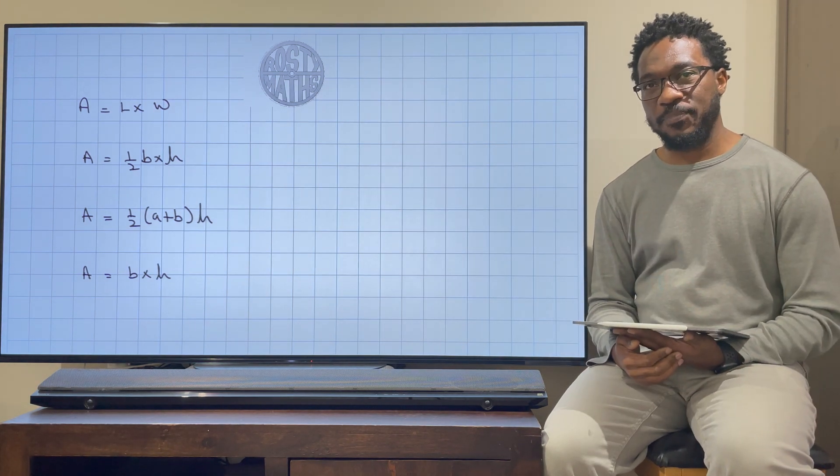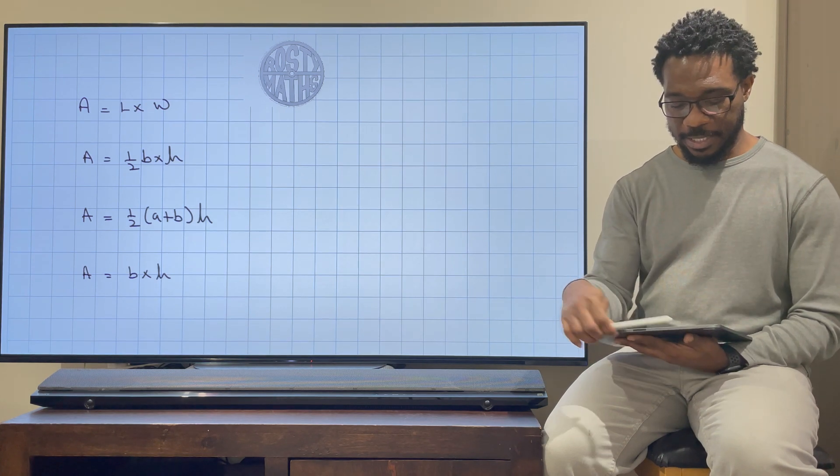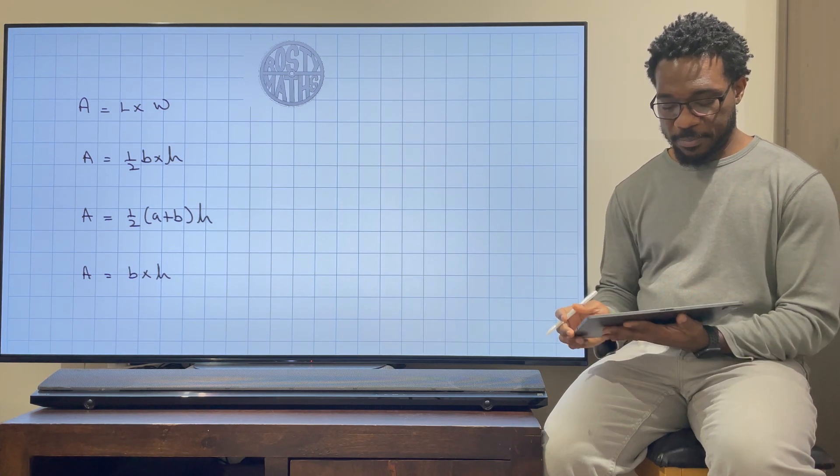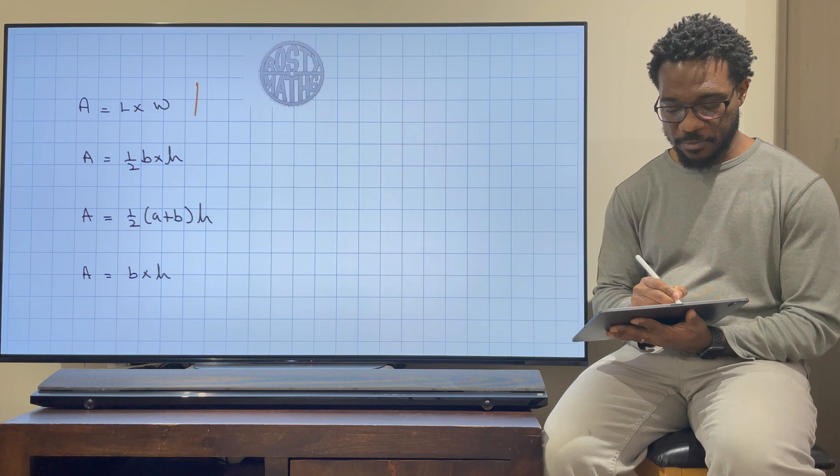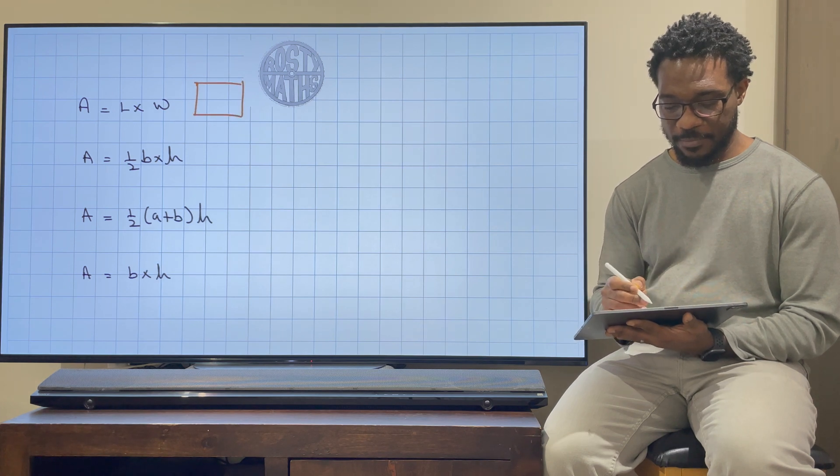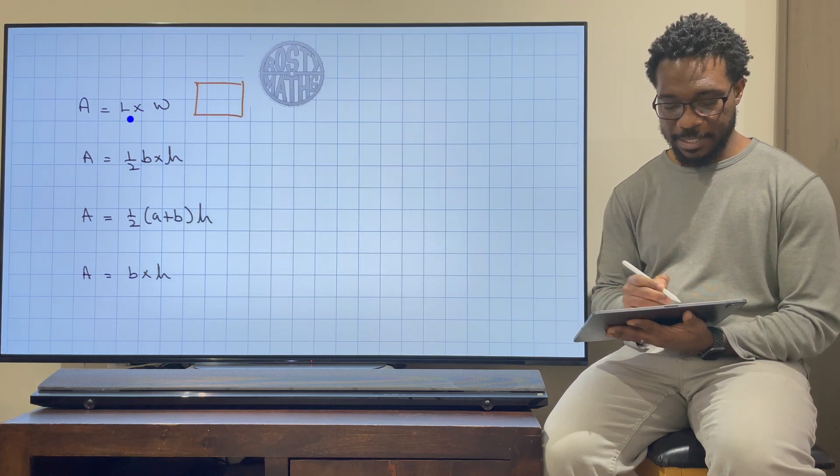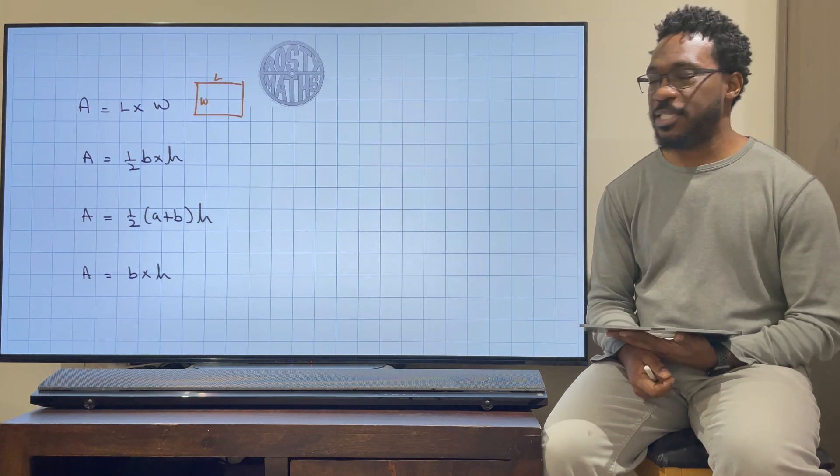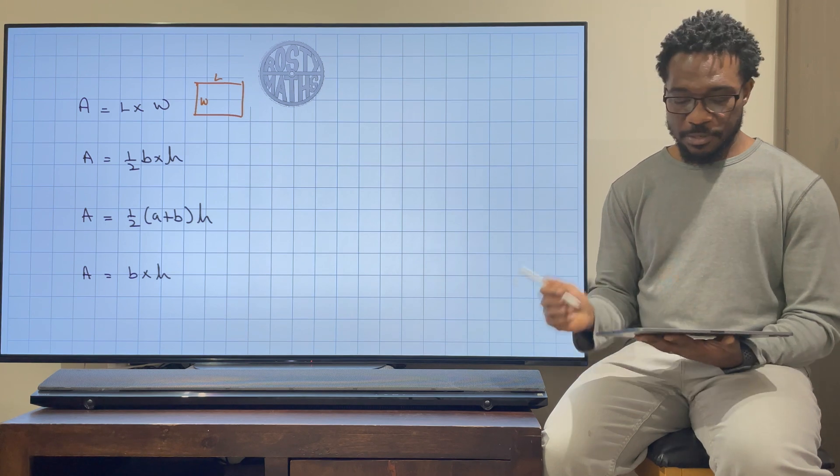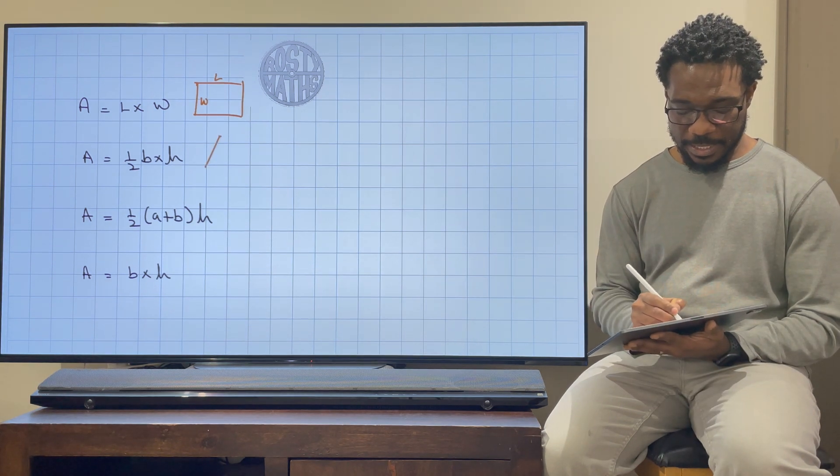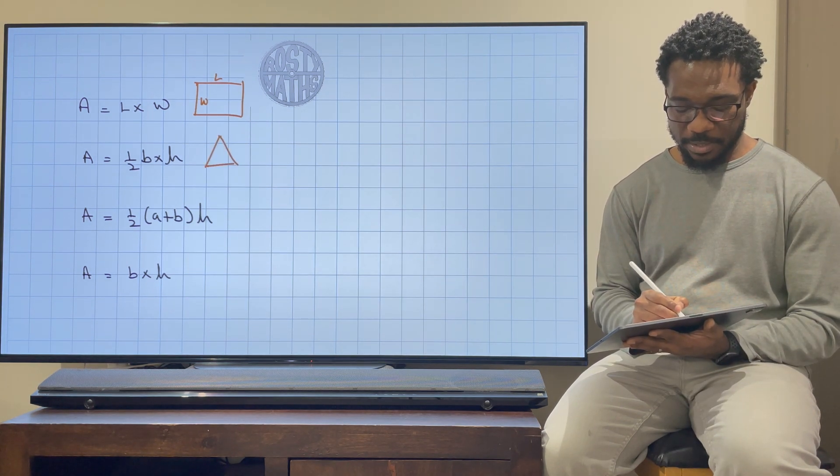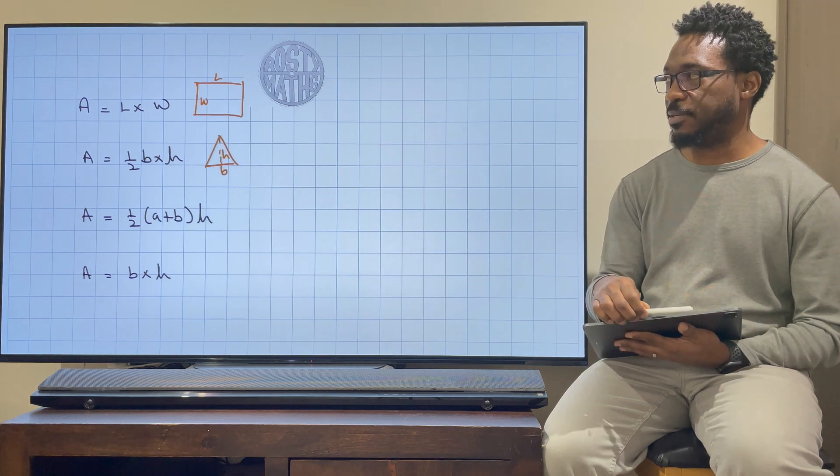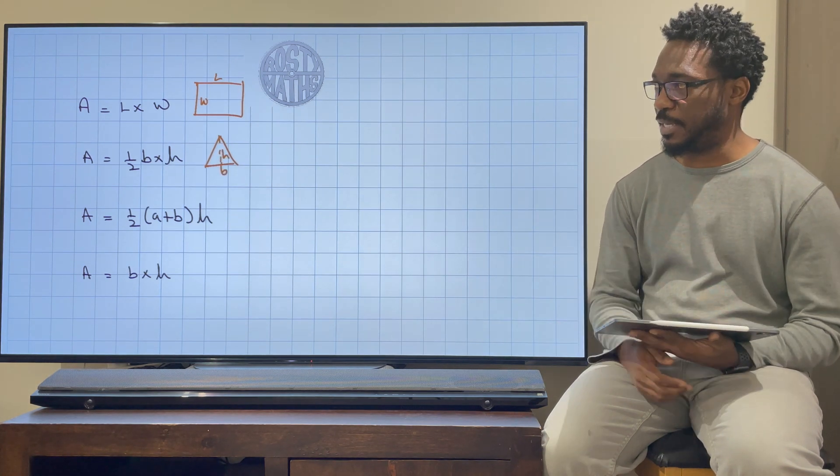Now these are some formulas I've got here that you might be familiar with. Like for example, you might be familiar with this first formula that says the area of a rectangle is the length times the width. So that's a formula that you know. You might be familiar with this formula here that says the area of a triangle is the base times the height divided by two, or half the base times the height.